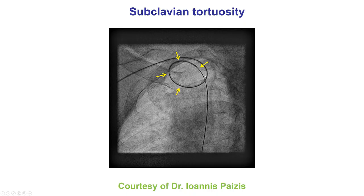This is another example of subclavian tortuosity. Sometimes catheters and wires can go through subclavian tortuosity; however, manipulation is then extremely challenging because of the significant bends on the catheter. In cases like this, it may be best to change to the contralateral radial axis or to femoral axis.